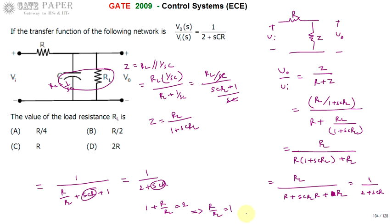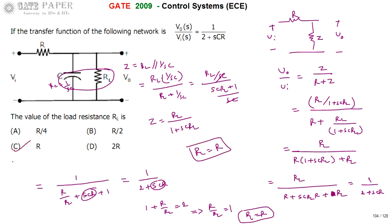Therefore RL = R. The load resistance equals R. So the correct option for this question is C.